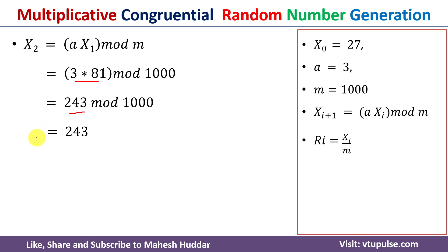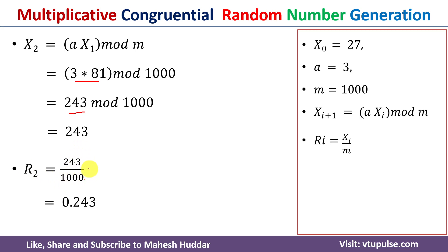Now we need to calculate R₂. R₂ = X₂ / 1000 = 243 / 1000 = 0.243. This is the third random number.